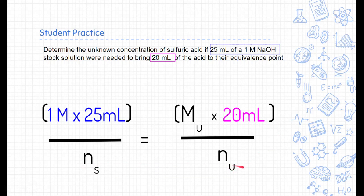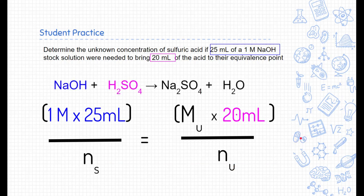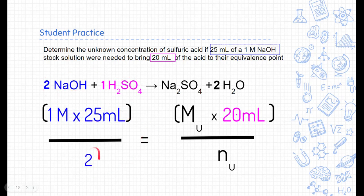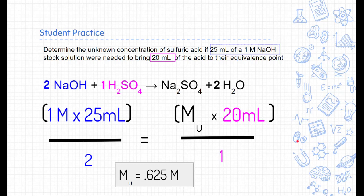Now I need to figure out the N values — the coefficients from a balanced chemical reaction equation. Here is the unbalanced equation. I'll balance it by adding a 2 in front of sodium hydroxide and a 2 in front of water; everything else is a coefficient of 1. These are the mole ratios: base to acid. The base coefficient goes under the stock solution side and the acid coefficient under the unknown side. After simplification and division, the molarity of our unknown sulfuric acid is 0.625 molar.